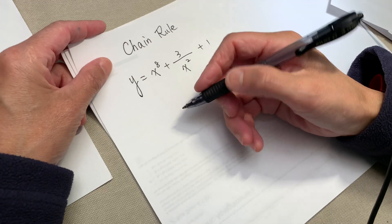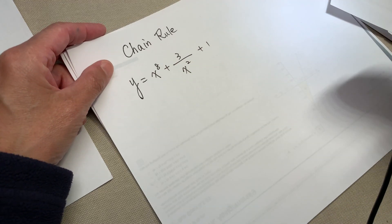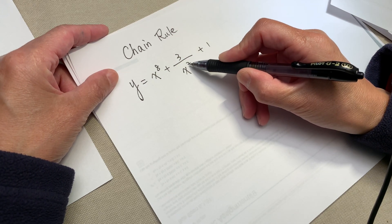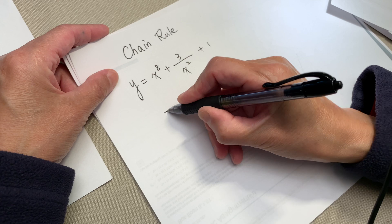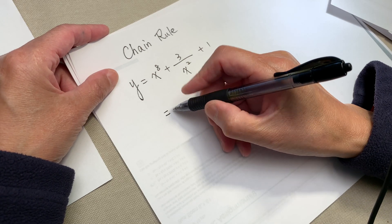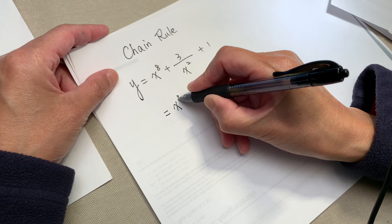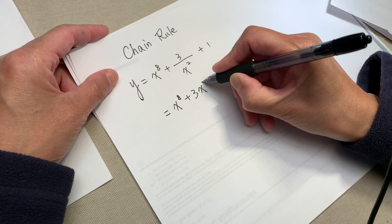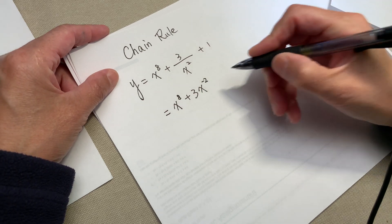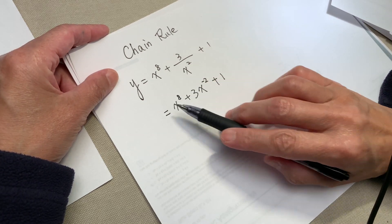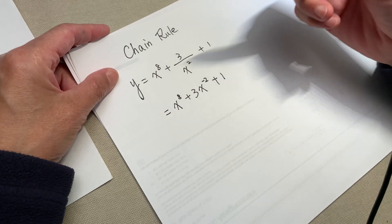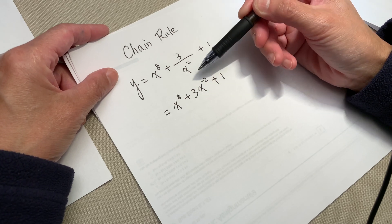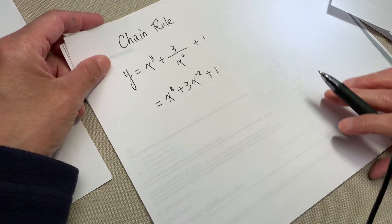If we want to find the derivative, we can rewrite this fraction form into power form: x to the power of 8 plus 3 times x to the power of negative 2, plus 1. I did not change anything — I completely rewrote it in a different way of writing, but the function and the equation did not change.